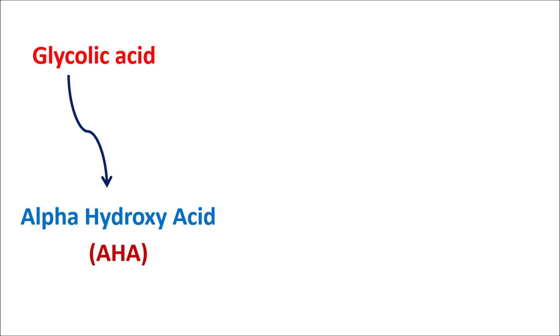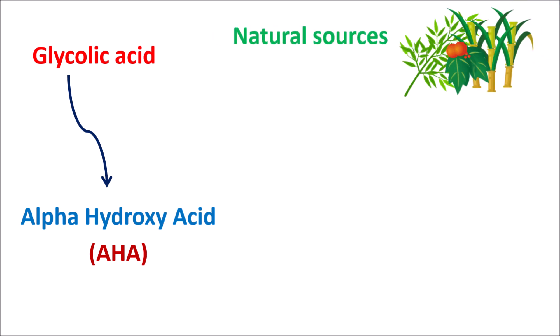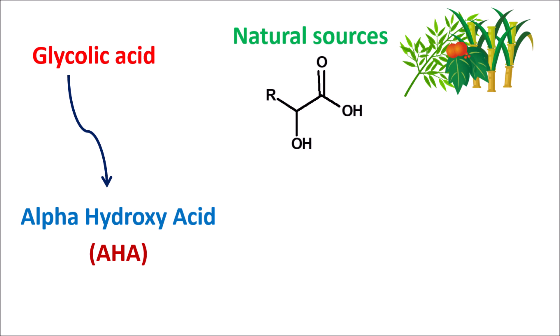These alpha hydroxy acids come from different types of natural sources and they have a general structure with a carboxylic acid group, which results in their acidic property. At the alpha carbon of this carboxylic acid, a hydroxyl group is attached. That's why they are called alpha hydroxy acids.